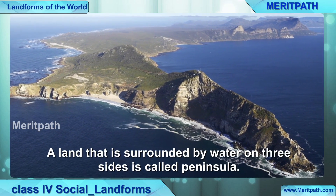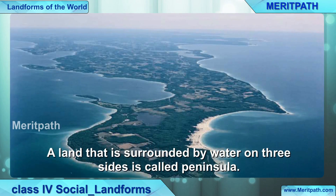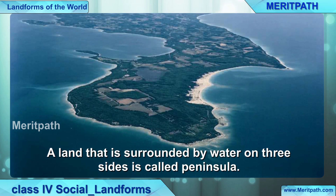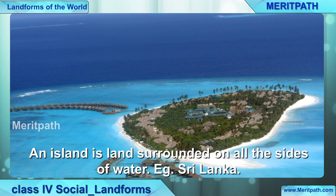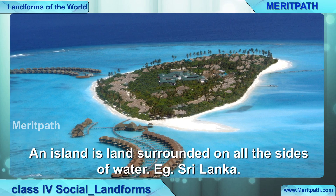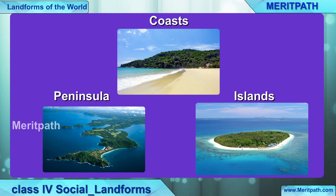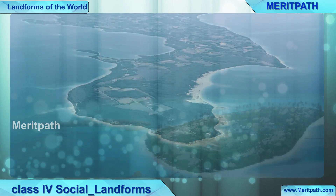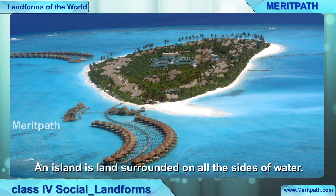Peninsula. What is a peninsula? A land that is surrounded by water on three sides is called a peninsula. You can see in the diagram how the land is surrounded by the sea on three sides. Island — what is an island? An island is land surrounded by water on all sides. Sri Lanka is an island. So, a peninsula is surrounded by water on three sides, while an island is surrounded by water on all sides.